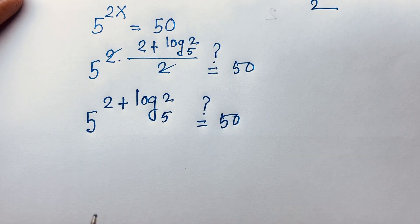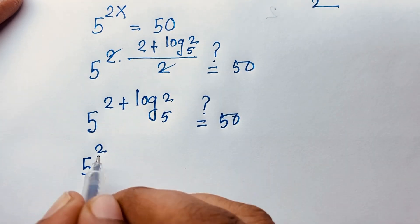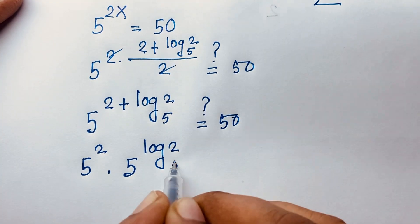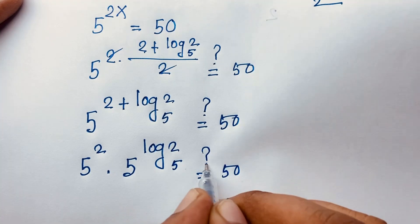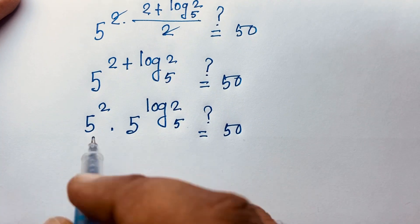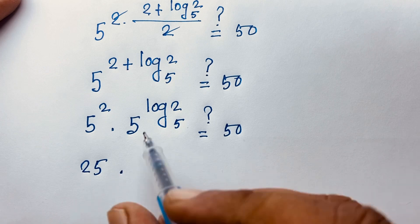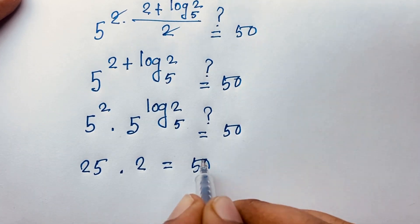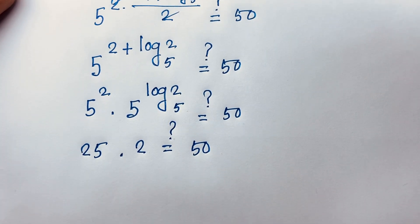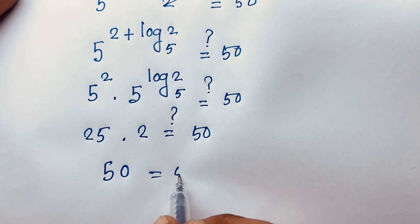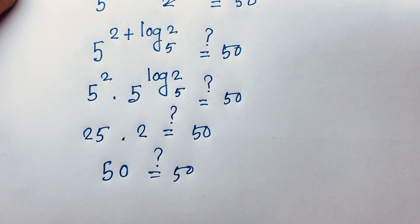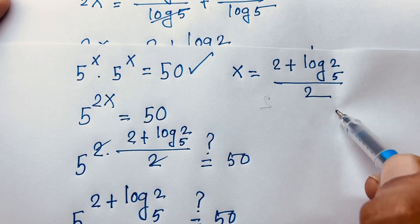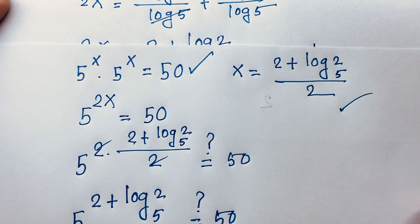Now here, 5 to the power (2 + log base 5 of 2) equals 5 to the power 2 times 5 to the power log base 5 of 2, which equals 50. We know 5 to the power 2 is 25, and 5 to the power log base 5 of 2 equals 2, so 25 times 2 is 50, equal to 50. Left hand side equals right hand side, confirming x equals (2 + log base 5 of 2) over 2.